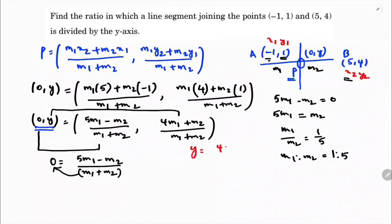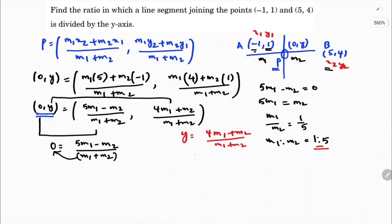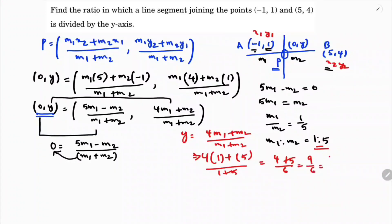So y = (4·m1 + 1·m2) / (m1 + m2). With m1 = 1 and m2 = 5: y = (4×1 + 1×5) / (1 + 5) = (4 + 5) / 6 = 9/6 = 3/2. Therefore the point dividing the segment in the ratio 1:5 is (0, 3/2).